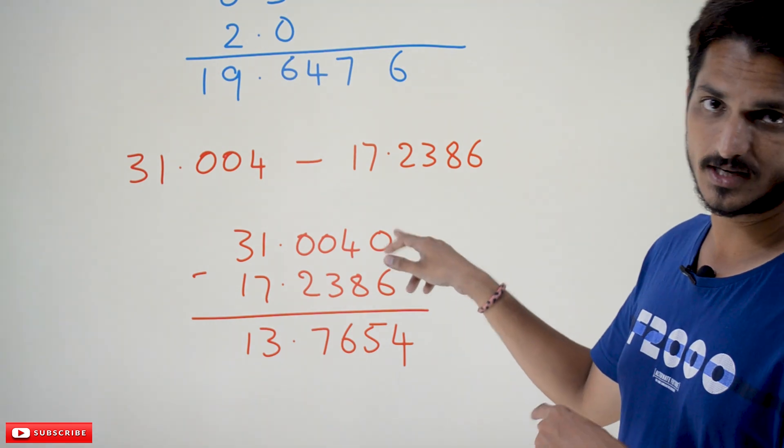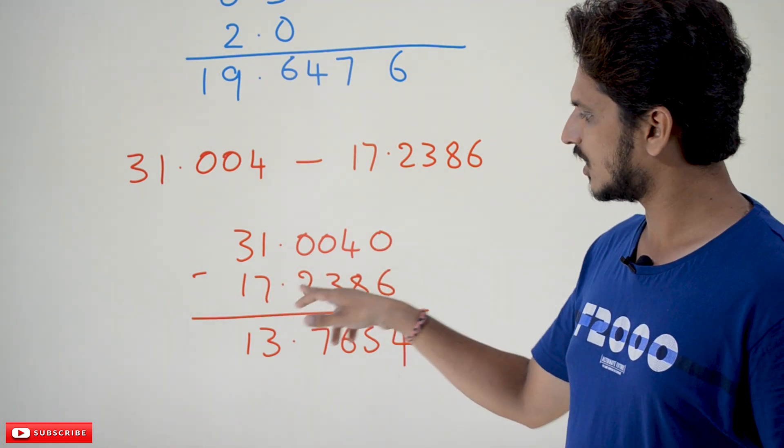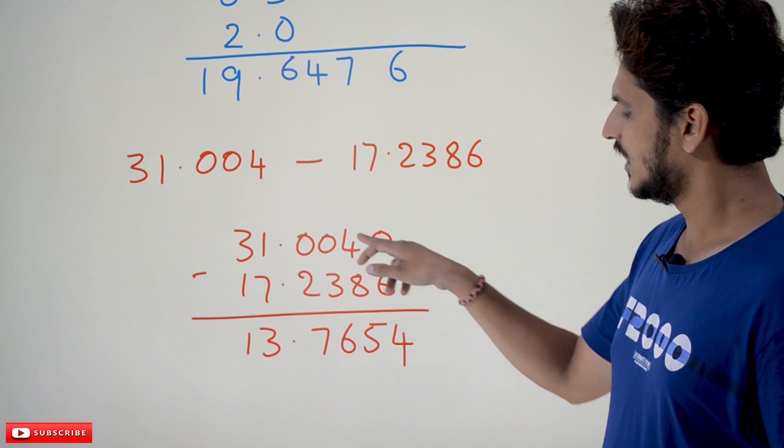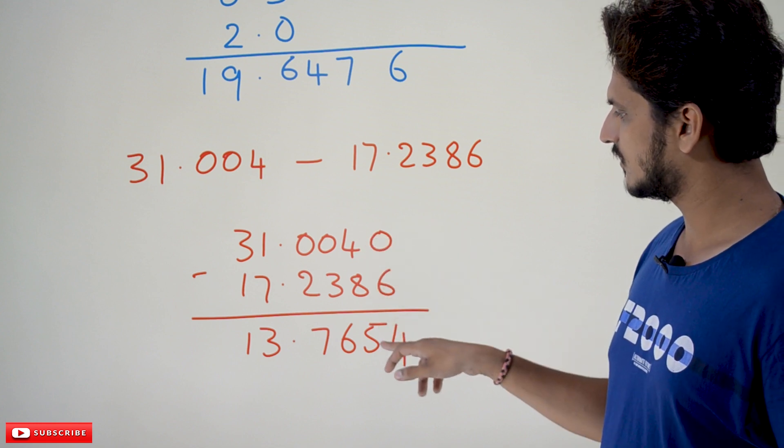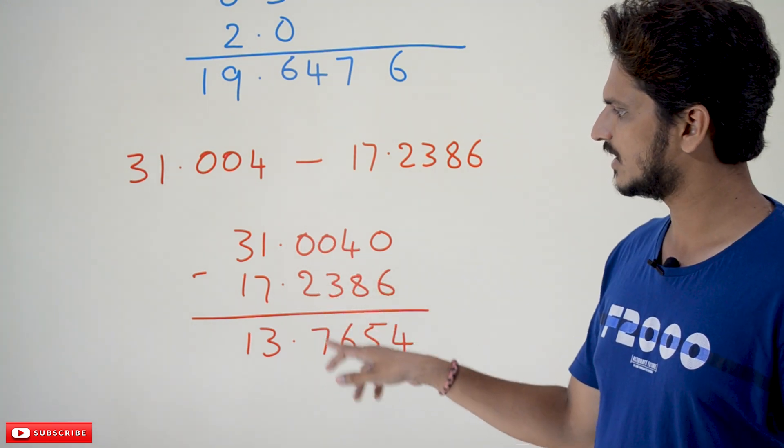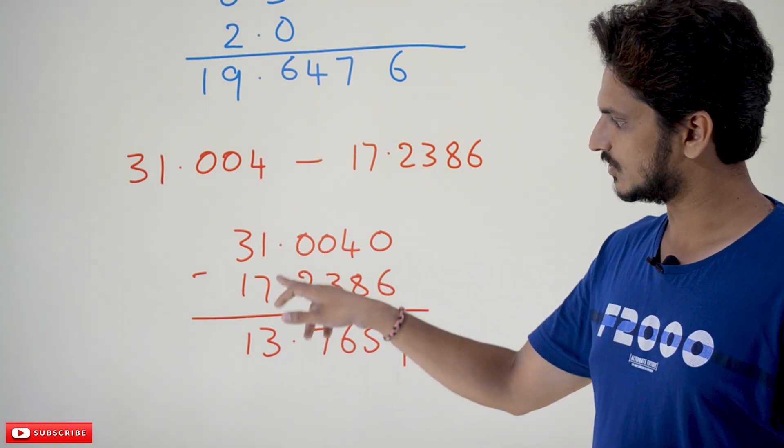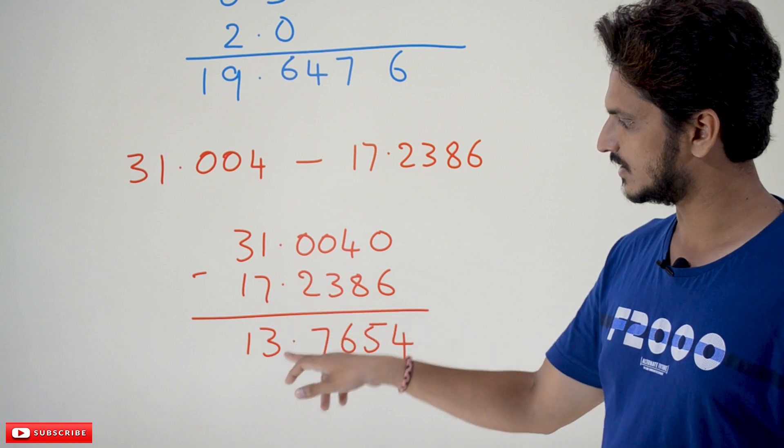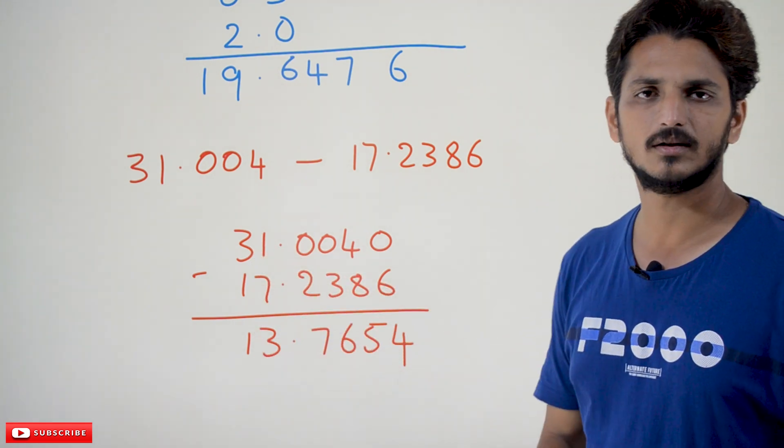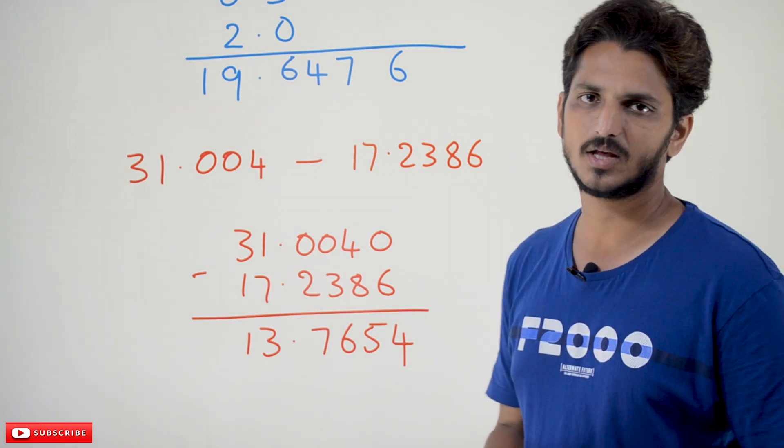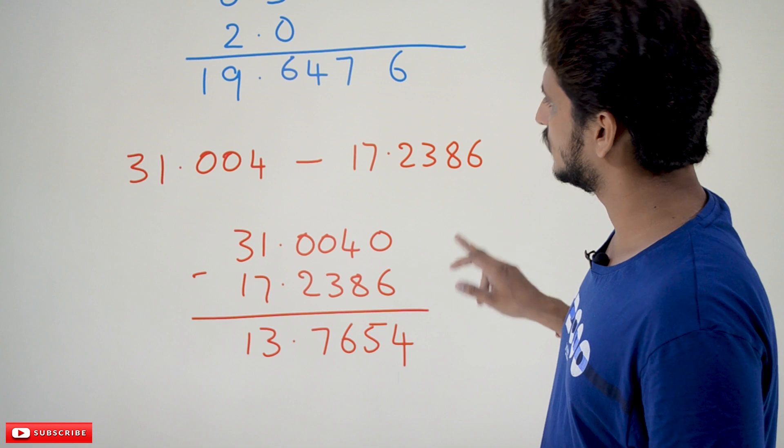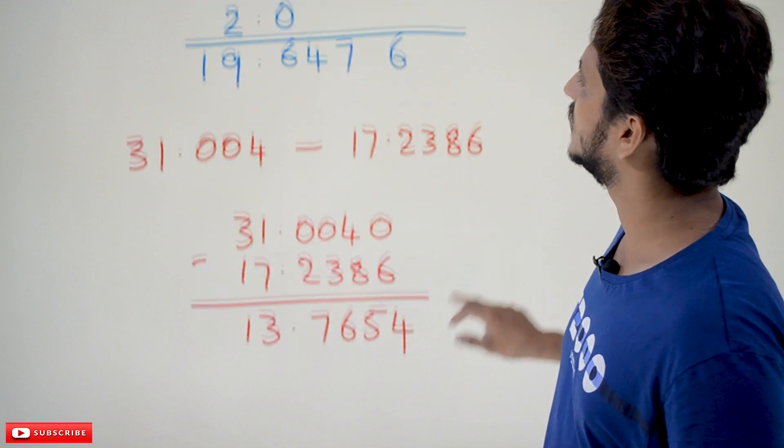31.0040 - we added this extra 0 - minus 17.2386. Normal subtraction: 10 minus 6 is 4, 13 minus 8 is 5, 9 minus 3 is 6, 9 minus 2 is 7, 1 means 0, 10 minus 7 is 3, 3 means 2, 2 minus 1 is 1. So this is how we do subtraction for decimal fractions.